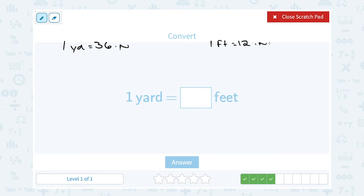So if we want to go from yards to feet, 36 inches, if you take that and divide it by how many inches are in a foot, 12 inches in a foot, 36 divided by 12 is 3. So one yard would be equal to 3 feet.